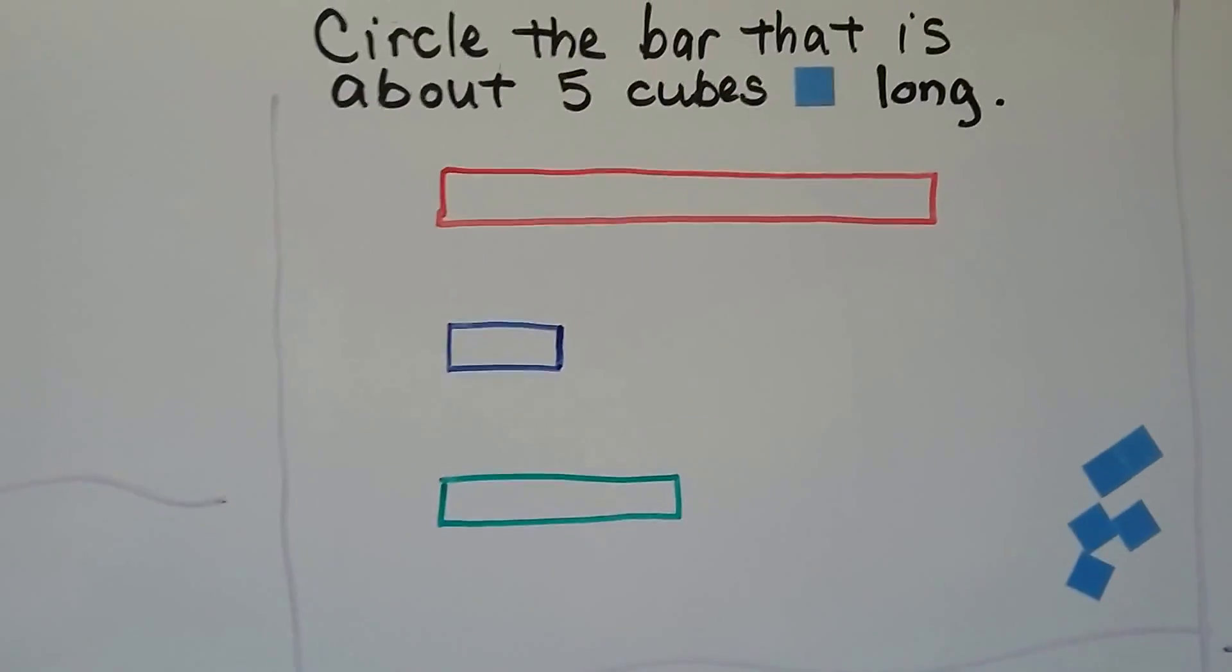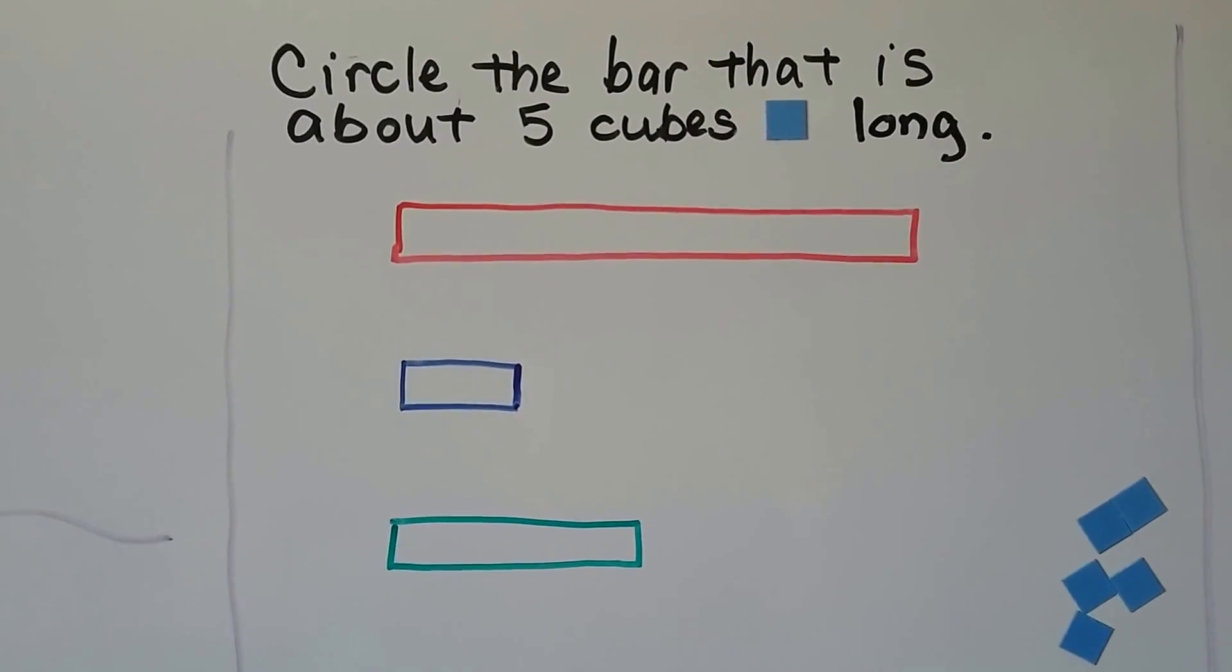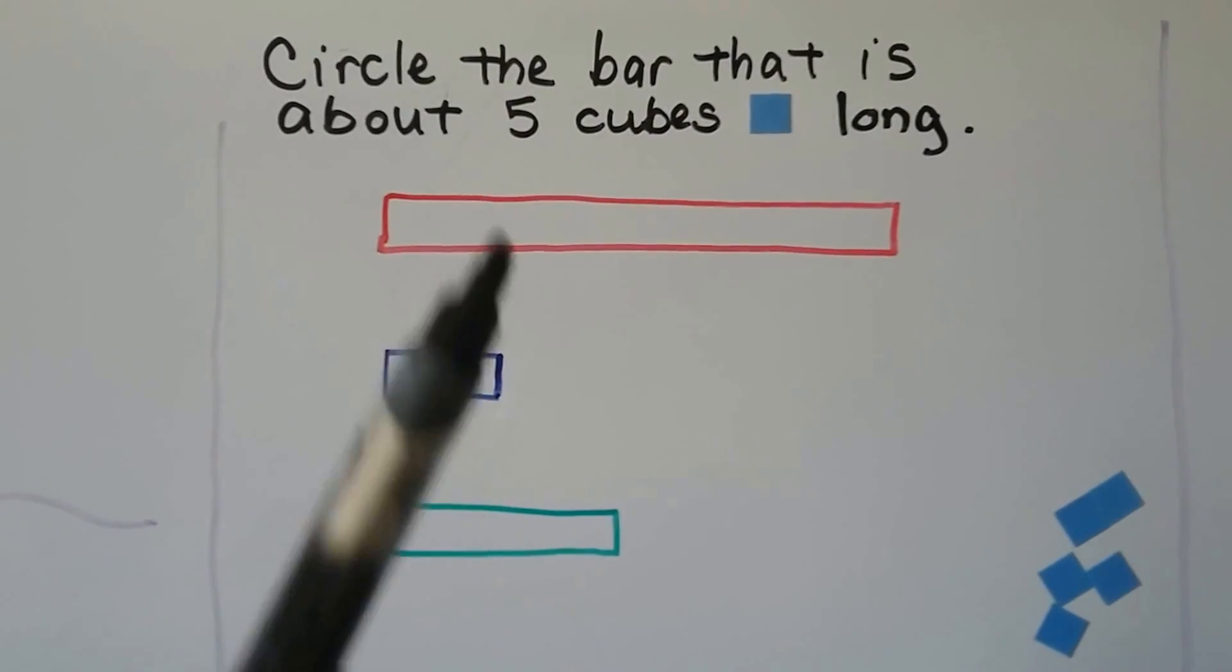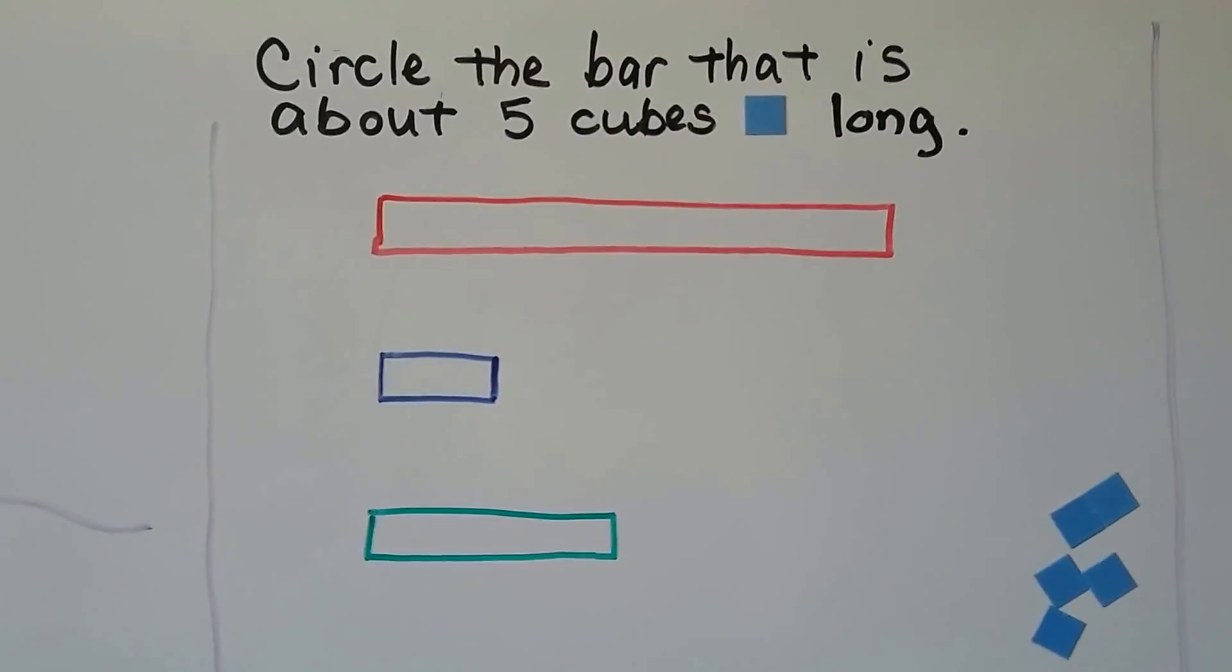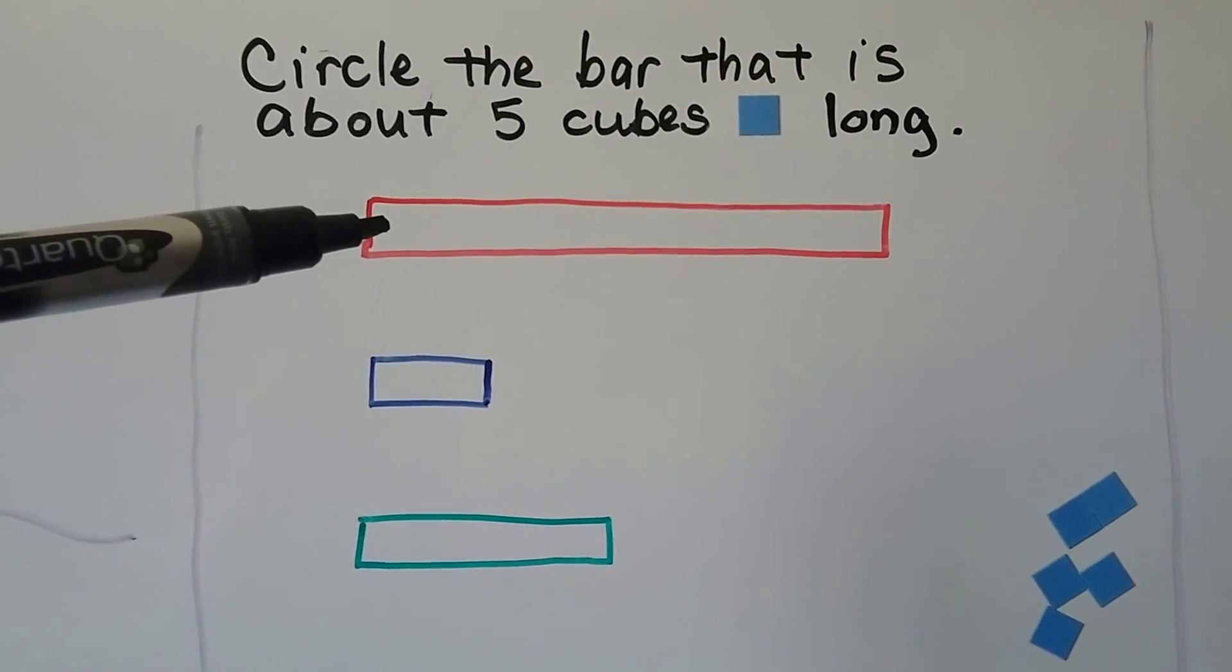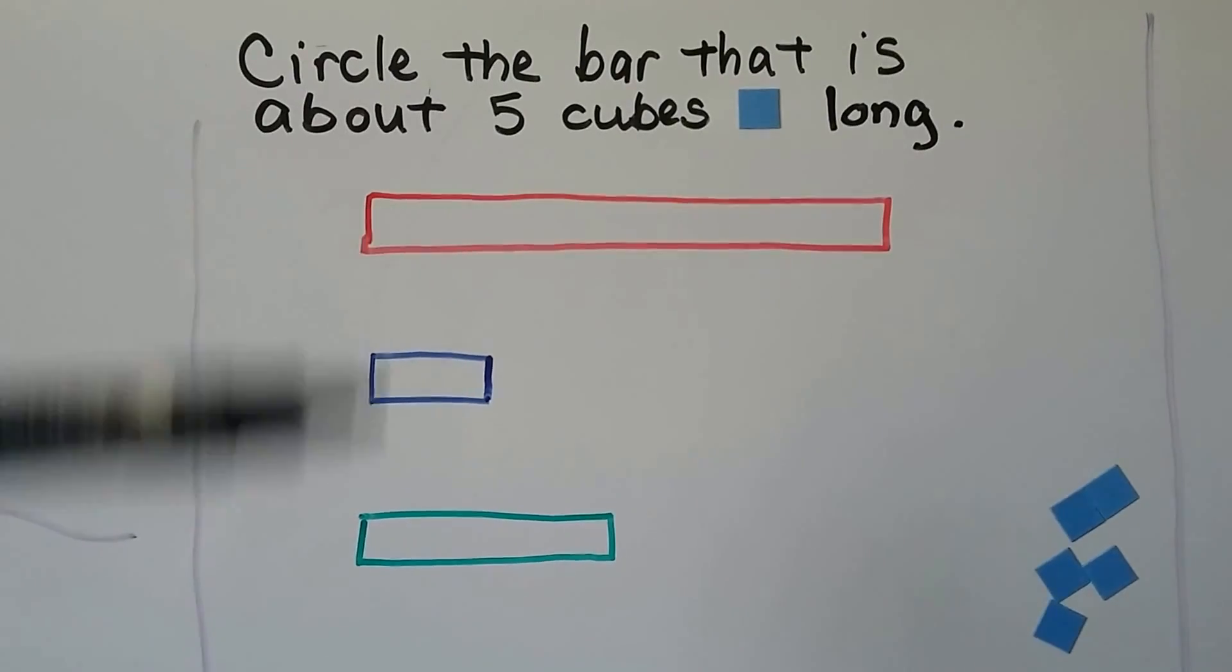We can circle the bar that is about five cubes long. If this is the size of a cube, which one of these do you think is about five cubes long? Do you think this red bar is about five cubes long? Could we fit five of them in here? Is that enough?